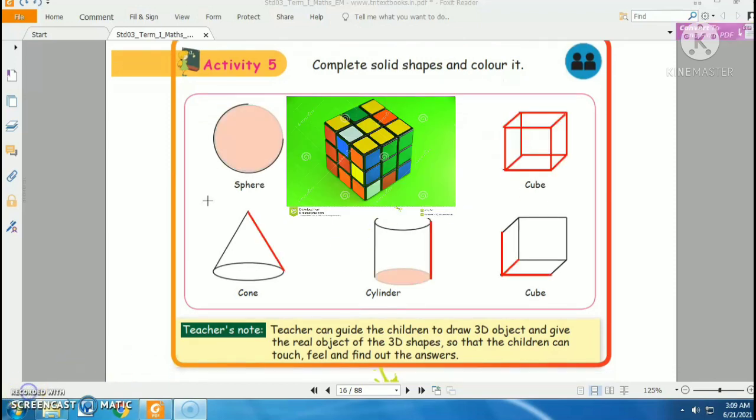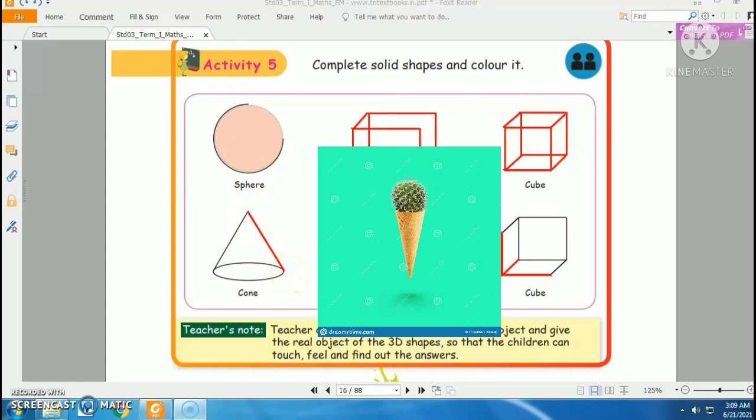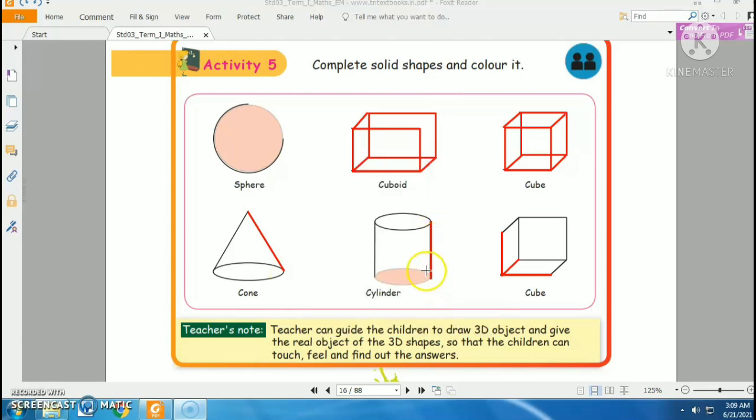Can you guess what exactly is the next shape? Yes, it's a cone. You can draw a line here to make a cone. Again you have a cylinder here, you just make a line here and two curve lines.